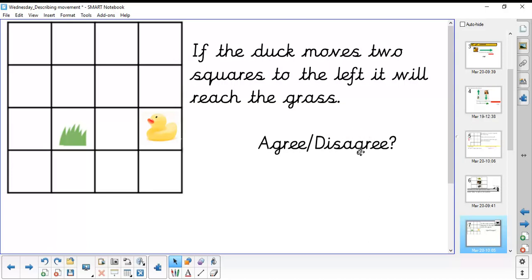Hopefully you disagreed. Because if the duck moves two squares to the left, quack, quack, quack, quack, it's going that way. So it's wrong.